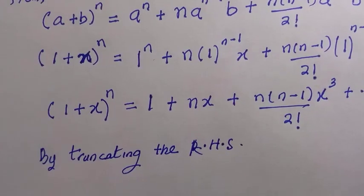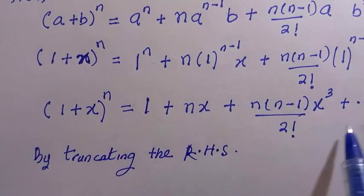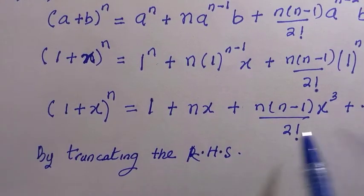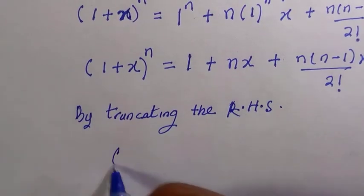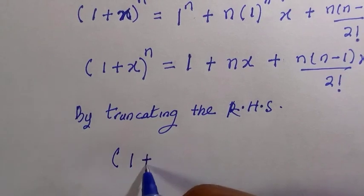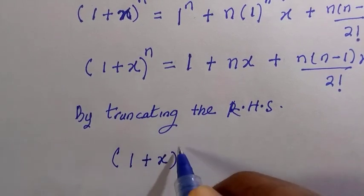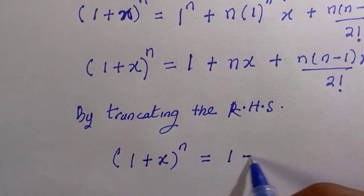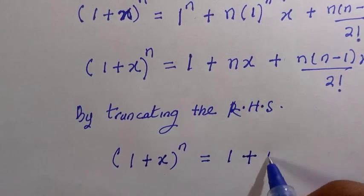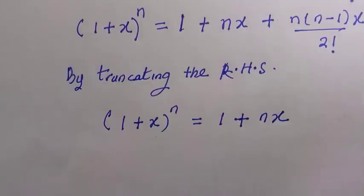So by doing this, we are going to cancel all the remaining terms and limit ourselves to the first two terms. So here we have 1 plus x raised to the power of n equals to 1 plus nx.